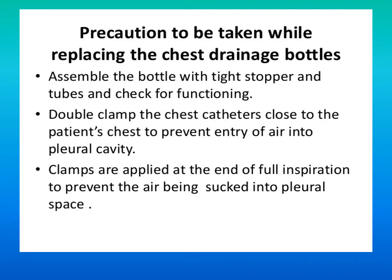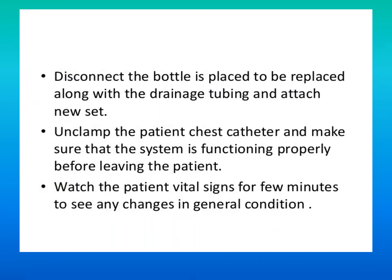Precautions when replacing chest drainage bottles: assemble the bottle with a tight stopper and tubes and check for functioning. Double clamp the chest catheter close to the patient's chest to prevent entry of air into the pleural cavity. Clamps are applied at the end of full inspiration to prevent air being sucked into the pleural space. Disconnect the bottle to be replaced along with the drainage tubing and attach the new set. Unclamp the patient's chest catheter and ensure the system is functioning properly before leaving the patient. Watch the patient's vital signs for a few minutes to observe any changes in general condition.